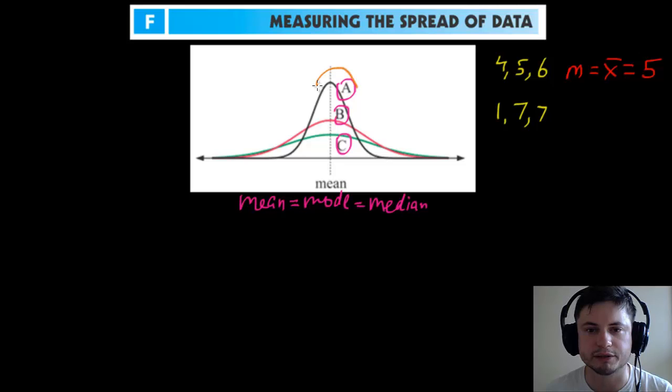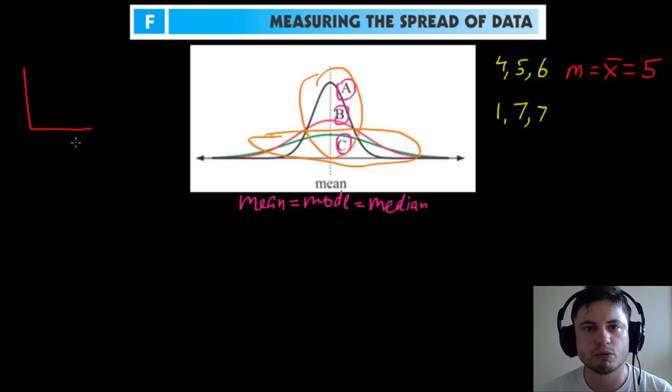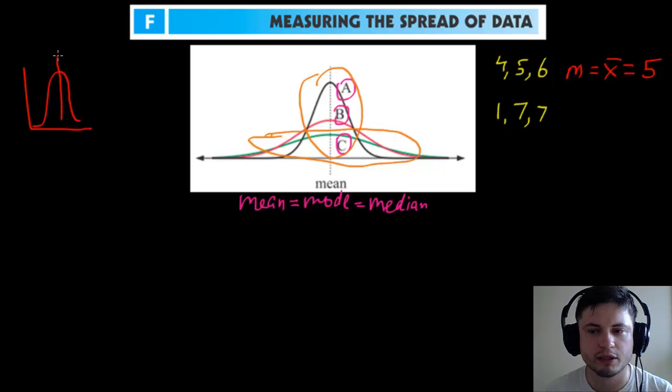of the data is in the middle, whereas for C, if you look at C, most of its data is spread out across the entire graph. This is what we call spread of data. What we were talking about before dealt with the center of the data. Now we're going to be talking about the spread of the data, essentially